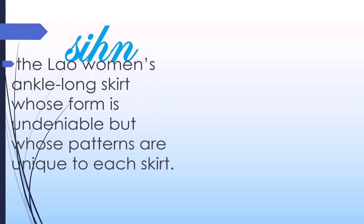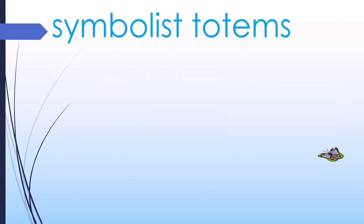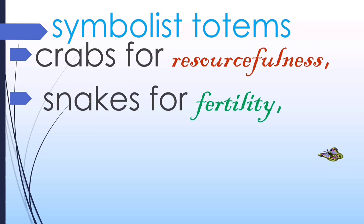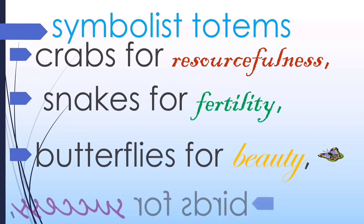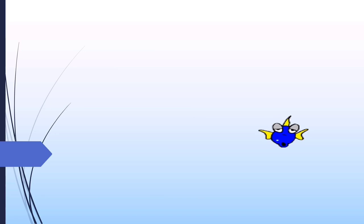Next is the country Laos. Laos also has their silk garment called the Sinh, which is a Lao woman's ankle-length skirt whose form is recognizable but whose patterns are unique to each skirt. The patterns symbolize totems — they use crabs for resourcefulness, snakes to symbolize fertility, butterflies for beauty, and birds for success.